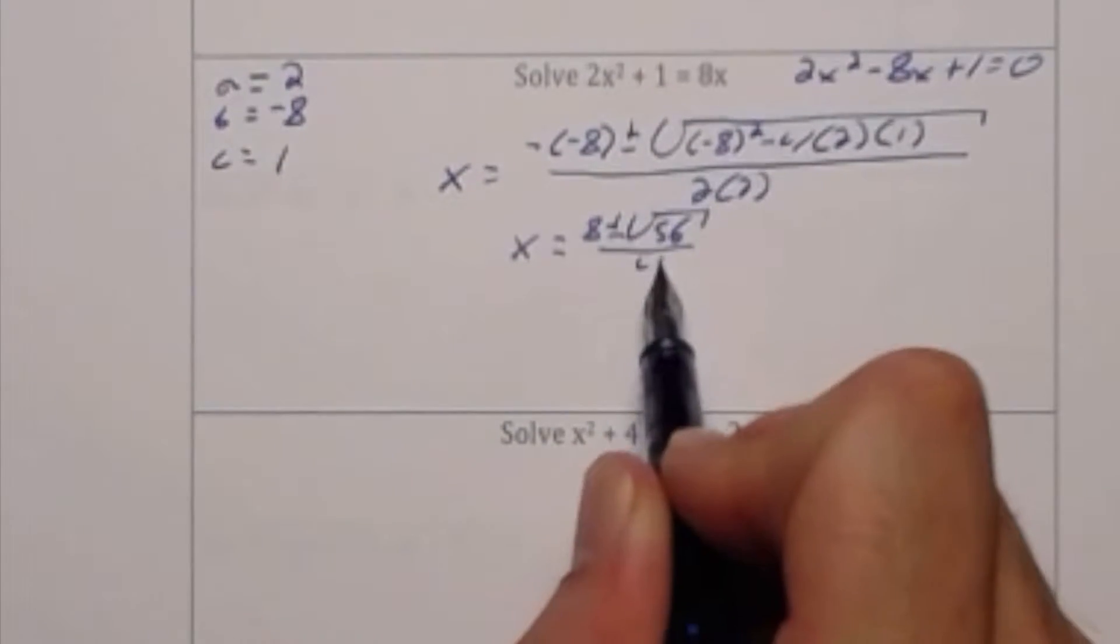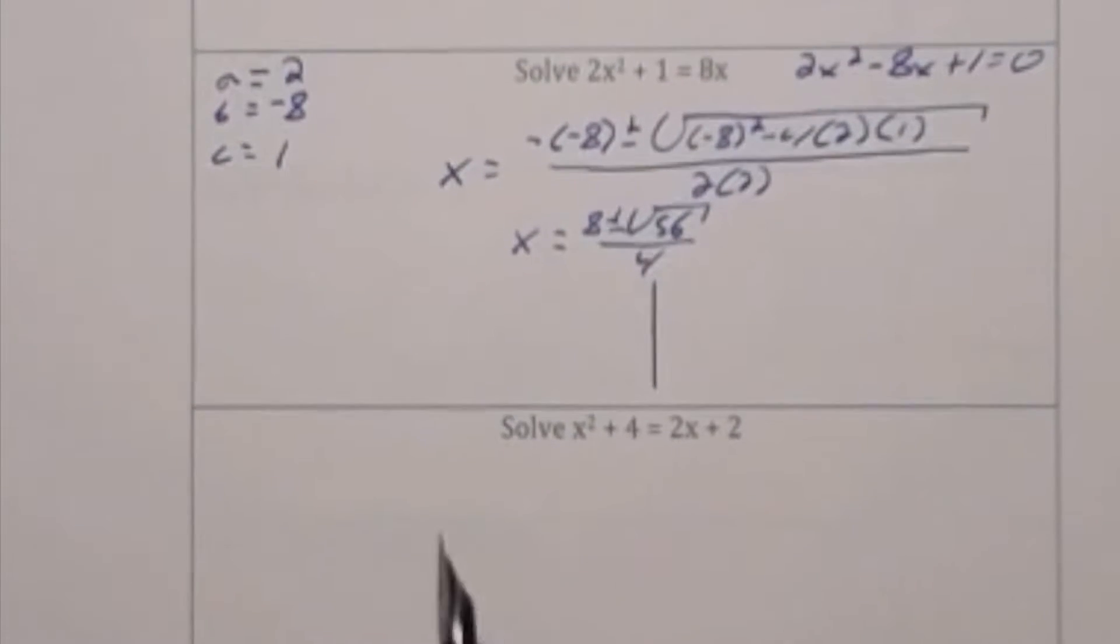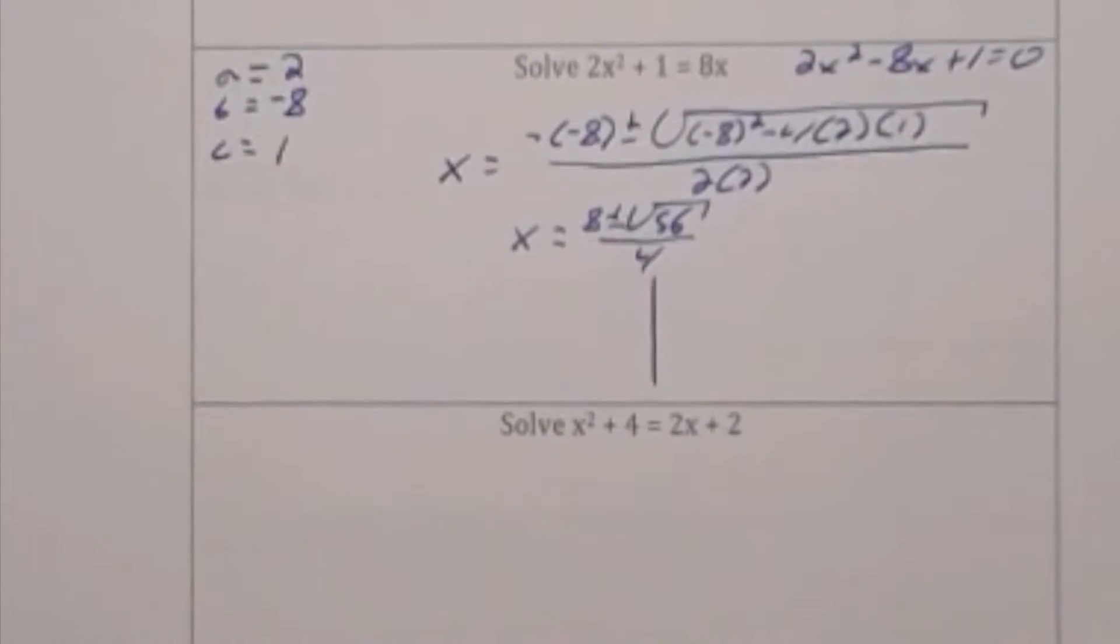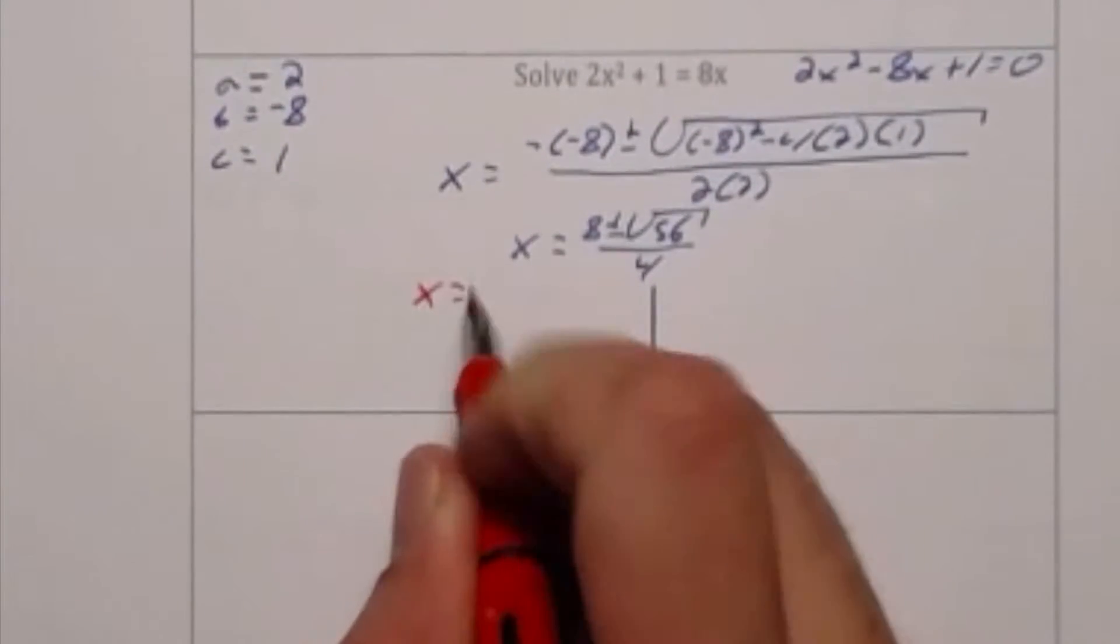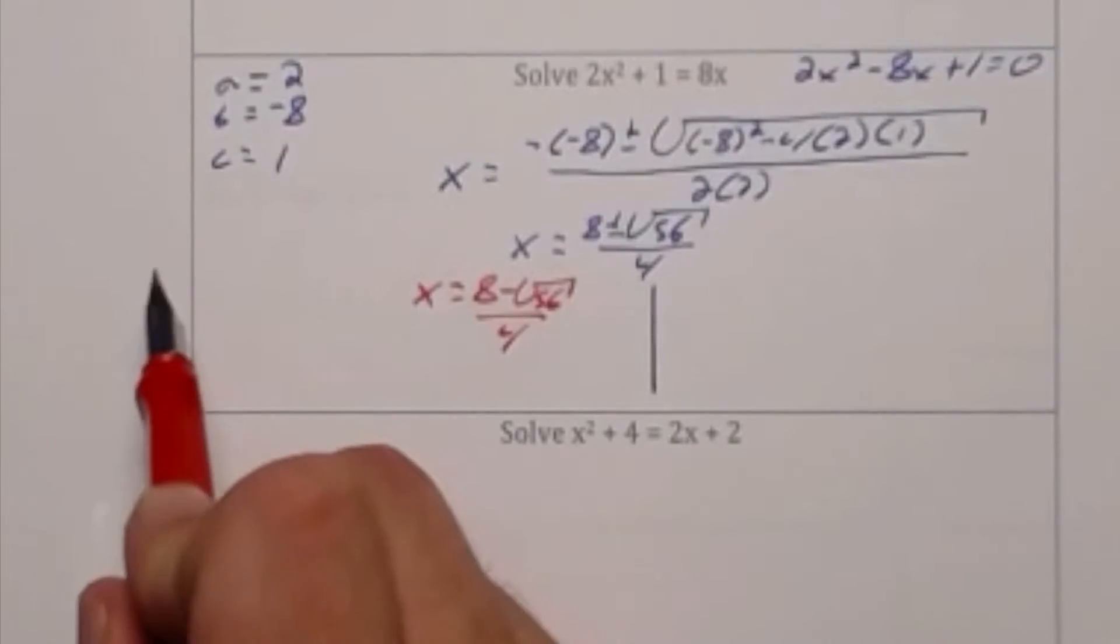Radical 56 is radical 4 times radical 14 and the square root of 4 is 2. So 2 radical 14 is the same thing as radical 56.